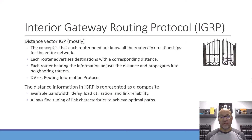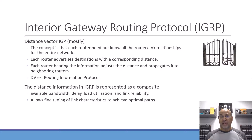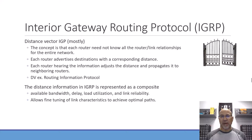RIP is another example of a distance vector protocol where the metric is just hop count. In IGRP, the metric is actually a composite of several variables: available bandwidth, delay, load utilization, and link reliability. This gives higher quality information that tells us more about the optimal path or the best way to get to the destination network.